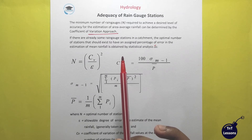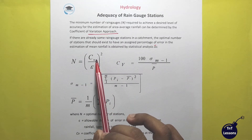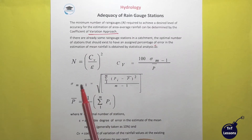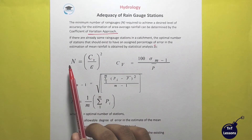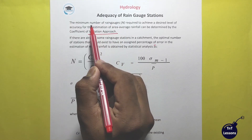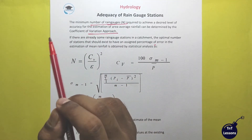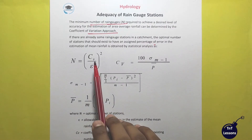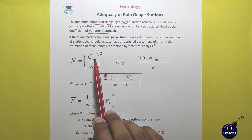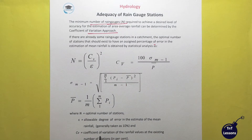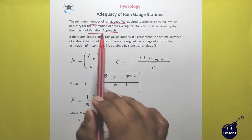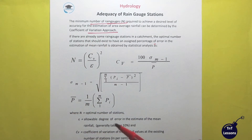We have to find the number N. Let's look at the number of rain gauges required. Then, what about CV? CV is the Coefficient of Variance. Let's look at the Coefficient of Variance approach.